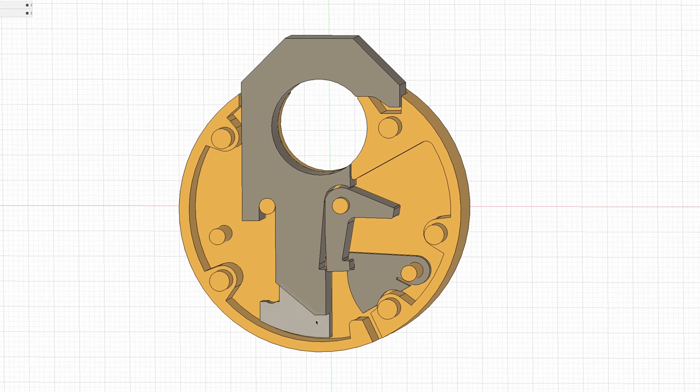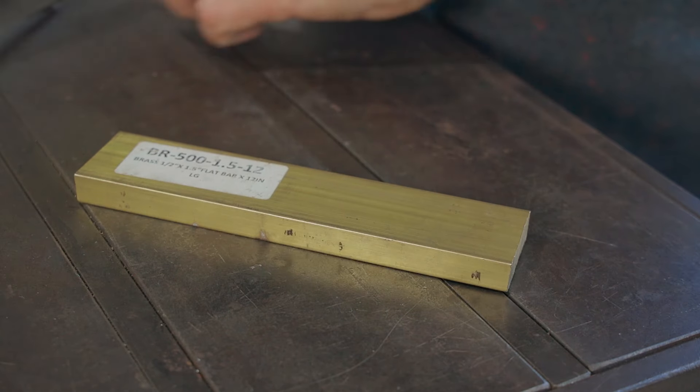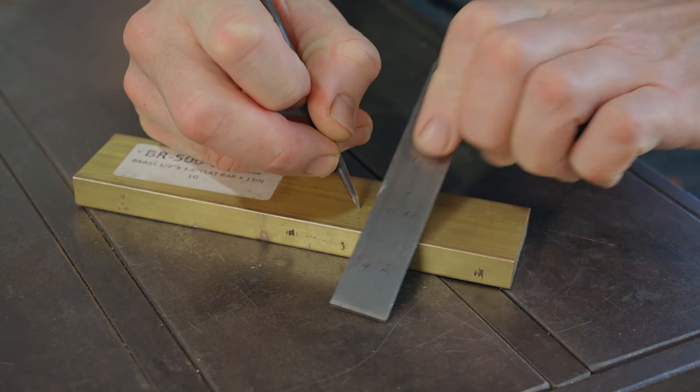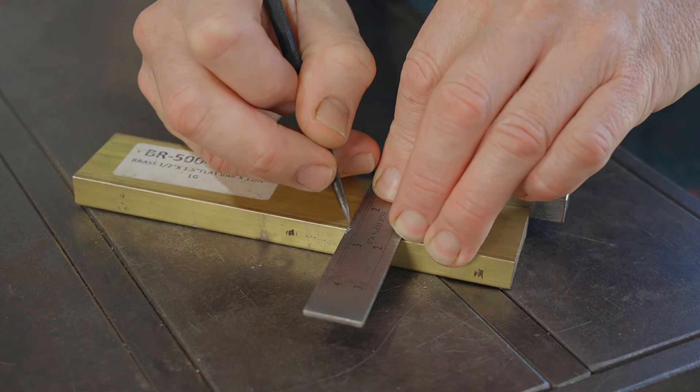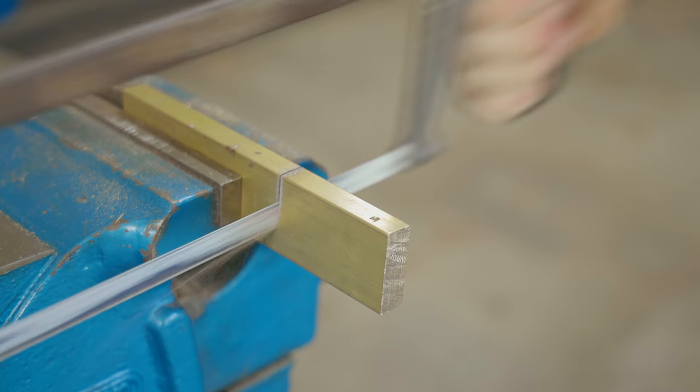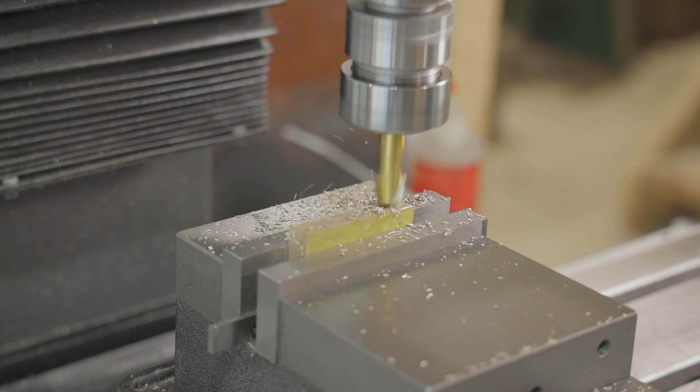I'll start with the main piece and that's the shackle, which will be made from this piece of brass flat bar. I'll cut off what I need and then mill it down to the correct size blank, and then from there I can start to shape it.